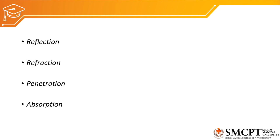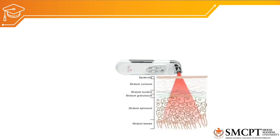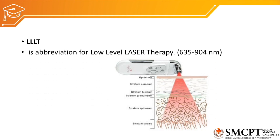Other properties of laser, similar to ordinary visible light, include reflection, refraction, penetration, and absorption. LLLT — low-level laser therapy — ranges from 635 to 904 nanometers and can be used for therapeutic purposes to enhance tissue healing.